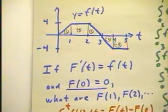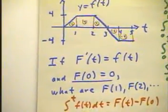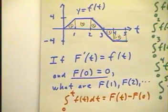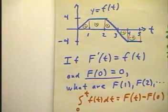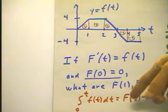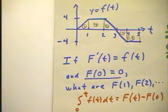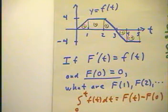And the fundamental theorem of calculus gives us a perfectly good statement about what happens. It says that in this case, in any case, the integral from a to b of f of t dt is going to be big F of b minus big F of a.